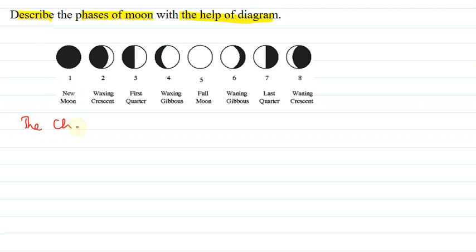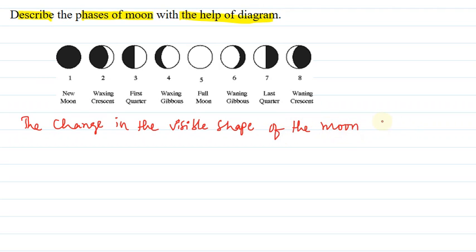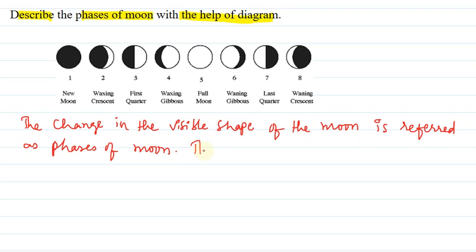The change in the visible shape of the moon is referred to as the phases of the moon. Jab moon ka shape change hota hai, usko hum phases of moon kahte hai.